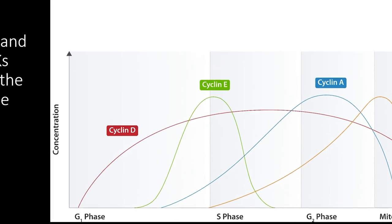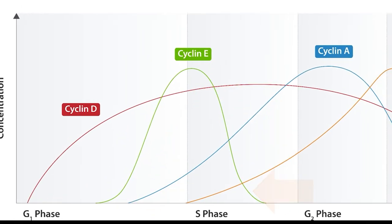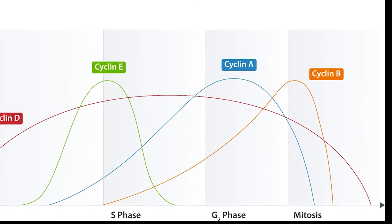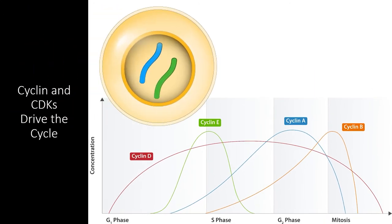This graph shows how the cyclins in a given organism rise and fall in concentration throughout the cell cycle. Though this graph just represents a theoretical organism, let's take a closer look at what causes these fluctuations and how they end up regulating the cell cycle.